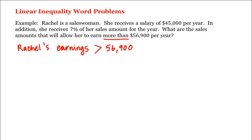What are these earnings? She receives a base salary of $45,000, but also 7% of her sales amount for the year. Her earnings are the base salary plus 7%, or 0.07, times her sales amount.